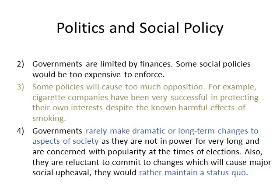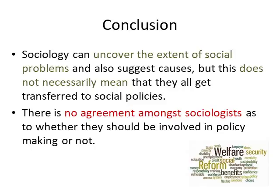In conclusion, sociology can uncover the extent of social problems, suggest causes for those problems, and in some regards even solutions for them. But this does not necessarily mean that findings all get transferred into social policy. Many governments sympathise with sociological research but, for various reasons such as it causing too much opposition or costing too much money, change does not occur. There is also no agreement among sociologists as to whether they should be involved in policymaking at all. Some argue you should use sociology as a tool to try and make the world a better place, while others say it's not their role — that all sociology is, is a way of looking at the world that might be useful for the individual, but that does not necessarily mean you have the right to try and change it for everyone else.